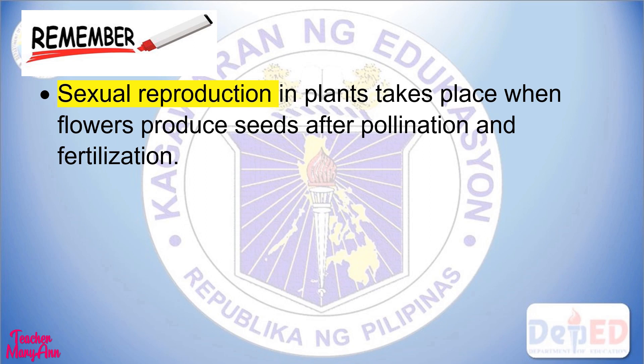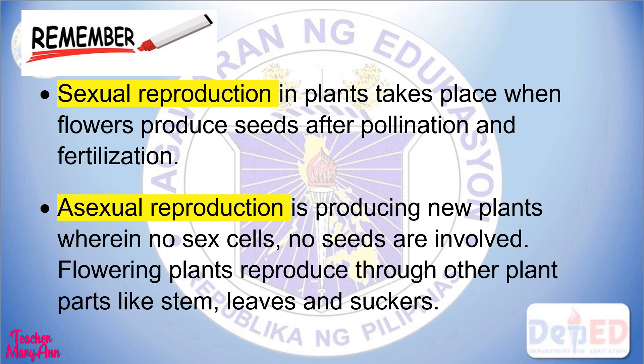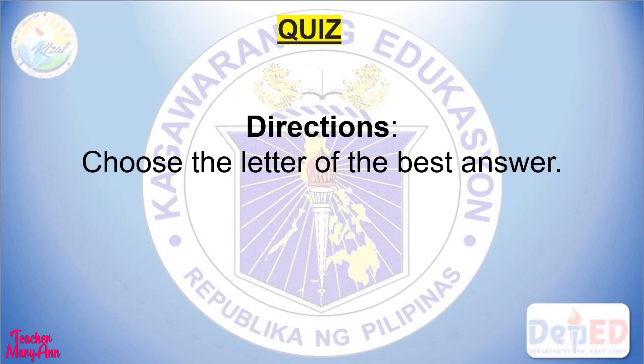What might happen to humans if flowering plants do not reproduce anymore? If flowering plants do not reproduce anymore, humans will be hungry because we get some of our food supply from these plants. Remember: sexual reproduction in plants takes place when flowers produce seeds after pollination and fertilization. Asexual reproduction is producing new plants wherein no sexes and no seeds are involved — flowering plants reproduce through other plant parts like stems, leaves, and suckers.